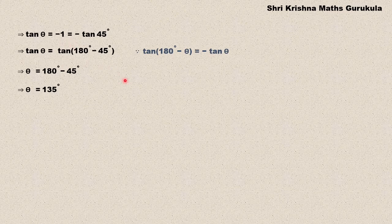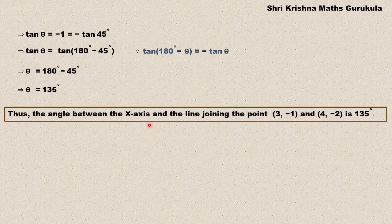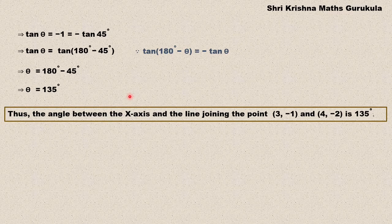Since the question has not specified which angle to mention, it is always better to mention the other angle also. So θ = 135° is the angle of inclination with the positive x-axis, and the other angle φ = 45°. If you still have any doubts please mention them in the comment section.